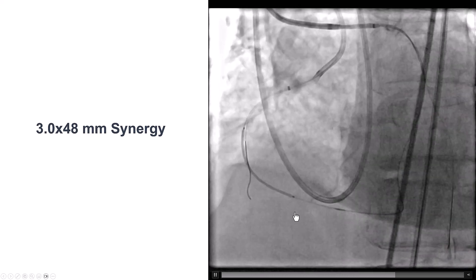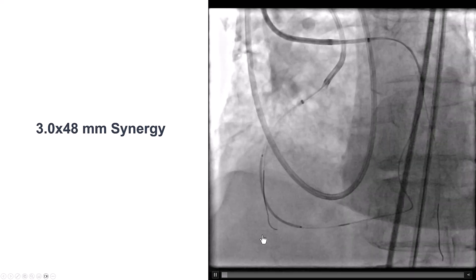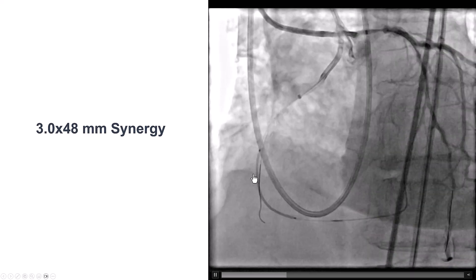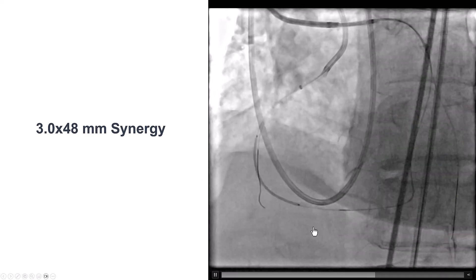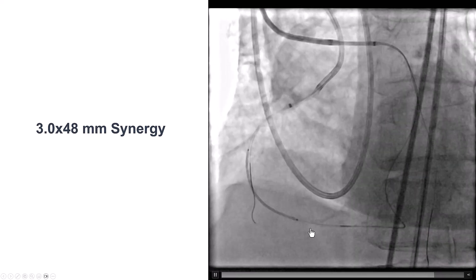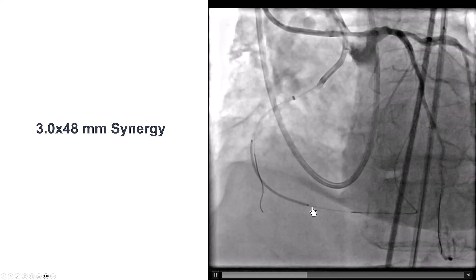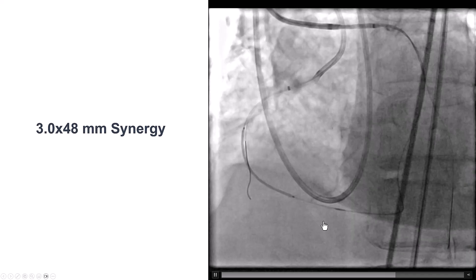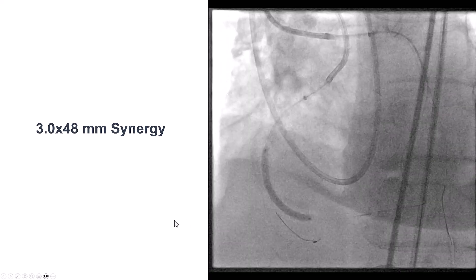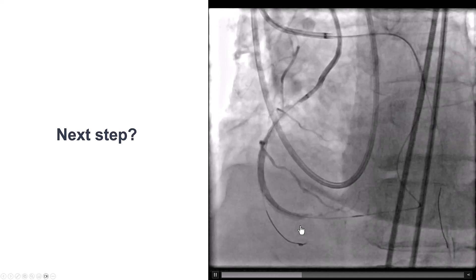IVUS demonstrated we were extraplaque for only a short segment of the vessel. We placed a long 3.0 by 48 mm synergy drug-eluting stent, trying to park it proximal to the distal touchdown. We did a few injections to confirm the location was favorable, then deployed the stent.